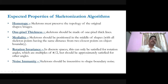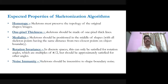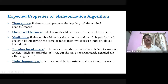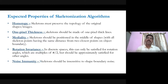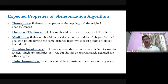The fourth requirement is rotation invariance. Even if the object is rotated — by 38 degrees, 45 degrees, 90 degrees, or any angle — the skeleton should remain the same. In discrete space this can only be fully satisfied for rotation angles that are multiples of pi/2, but should be approximately satisfied for other angles as well.